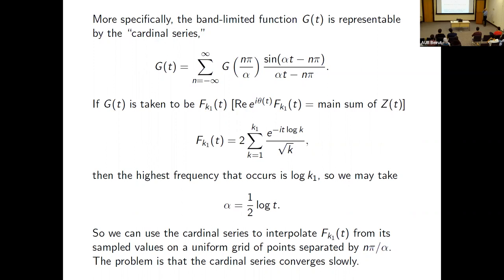The problem with the cardinal series is that it converges very slowly. The main decay comes only from the 1/n-type term in the sinc function — there's no reliable additional decay from g itself. Because of this slow convergence, computing f via the cardinal series may be more expensive than computing it from the original definition.